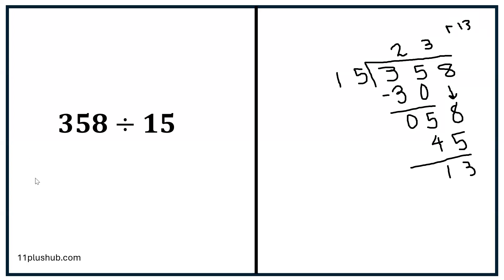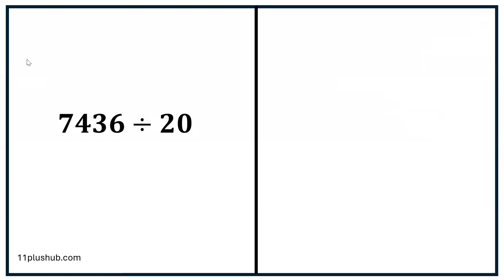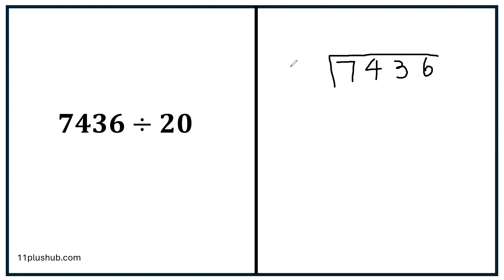All right, final example — this is our last example. So if you are still a little bit confused by it, that's okay, it is tricky. Watch very carefully. And if you're feeling confident, maybe pause the video right now and have a go at doing this one yourself to see if you get the answer correct. But if you're not, don't worry, just keep watching and hopefully this will clear things up. Okay, so 20 into 7,437.